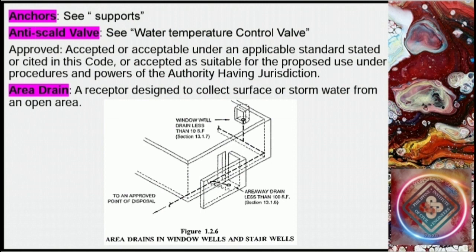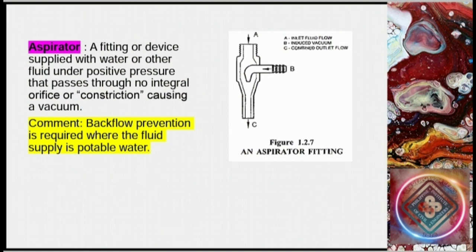Anchors: see supports. Anti-scald valve: see water temperature control valve. Approved: accepted or acceptable under an applicable standard stated or cited in this code, or accepted as suitable for the proposed use under procedures and powers of the authority having jurisdiction. Area drain: a receptor designed to collect surface or storm water from an open area. Aspirator: a fitting or device supplied with water or other fluid under positive pressure that passes through an integral orifice or constriction causing a vacuum. Comment: backflow prevention is required when the fluid supply is potable water.